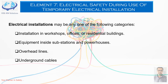Such installations can be categorized in the following ways: first, installations required for construction activity such as a workshop, manufacturing facility, office, or residential building; and second, equipment inside a substation or powerhouses, overhead lines, and underground cables. Whatever the typical installation, the broad principles and precautions are the same — the objective is to ensure the safety of persons and equipment.